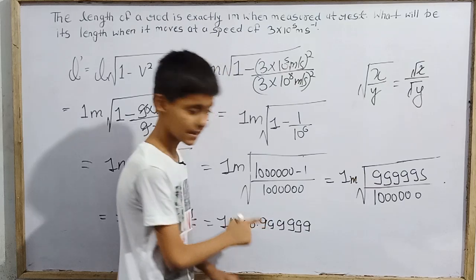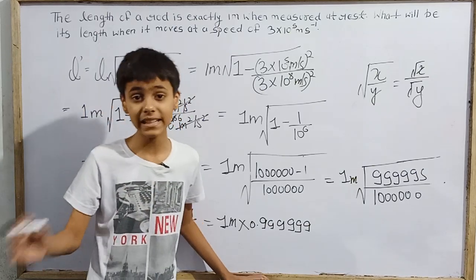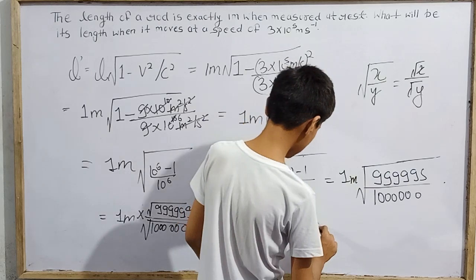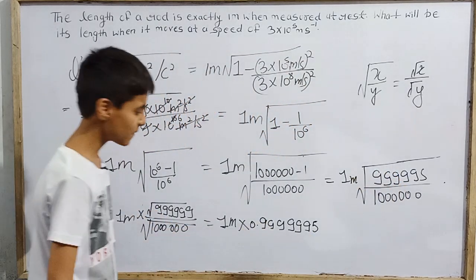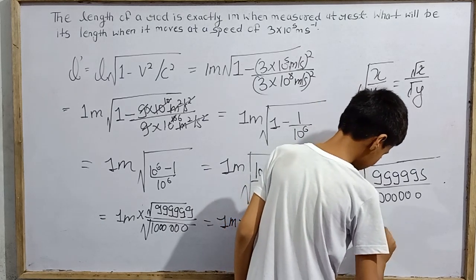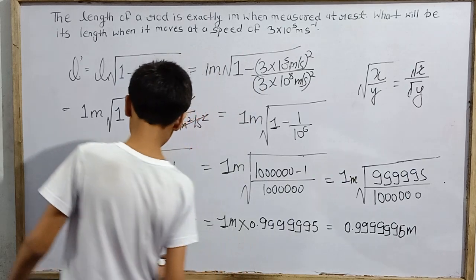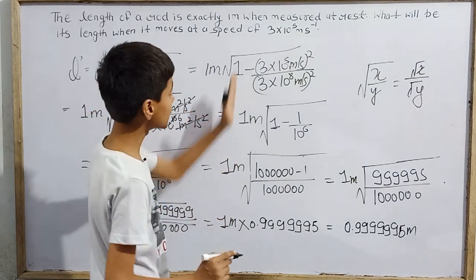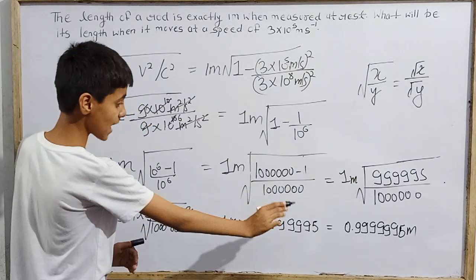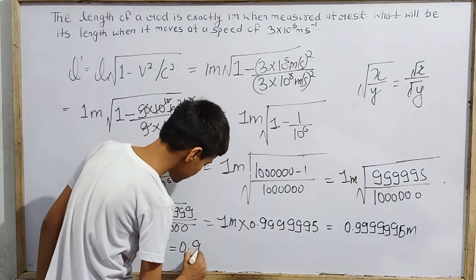After careful division, there is a repeating pattern of nines. The digit after several nines can be approximated as 5, since 4 followed by repeating 9s rounds up to 5. So the final result is approximately 0.9999995 meters. Due to length contraction, L' ≈ 0.9999995 meters.